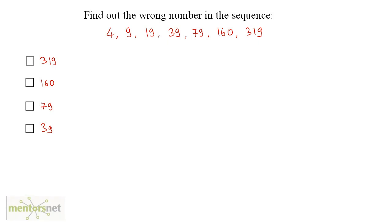What could be the answer of this question? So if you observe carefully, you can take the differences between the numbers. The difference between 4 and 9 is 5. The difference between 9 and 19 is 10. 19 and 39 is 20. And here, 39 and 79 is 40.